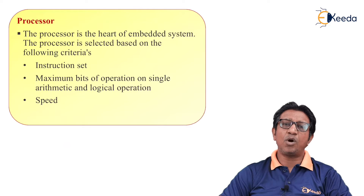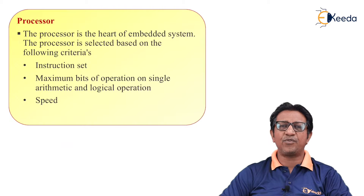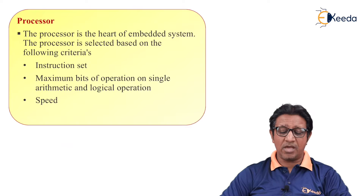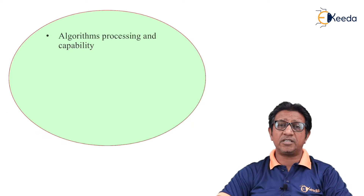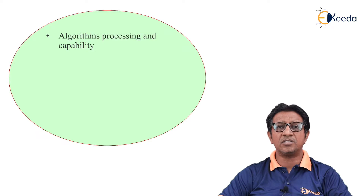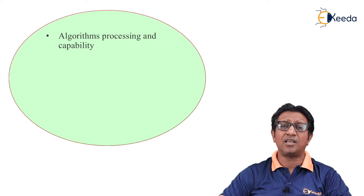Next comes speed, which is the crystal frequency at which the processor is functioning — it may be in megahertz or gigahertz. For example, the 8051 can work at 12 MHz as well as 16 MHz. The next is algorithm processing and capability. Depending on the embedded system's function, if it performs simple tasks, a simple processor suffices. But for complex functions like image processing or signal processing, a DSP-type processor is required.